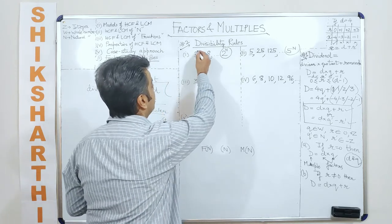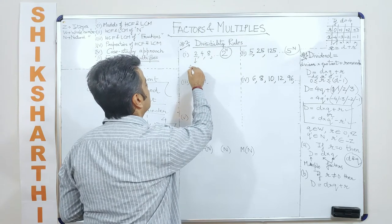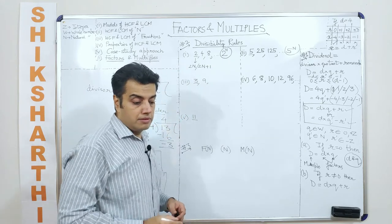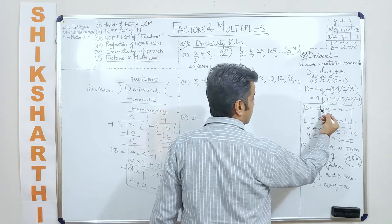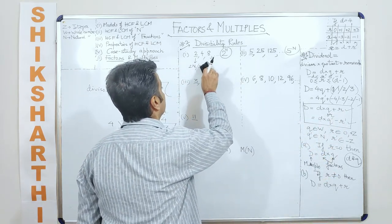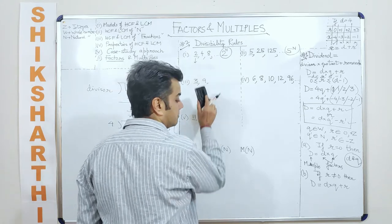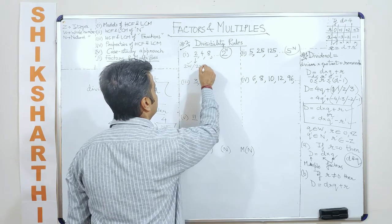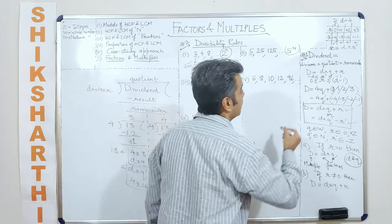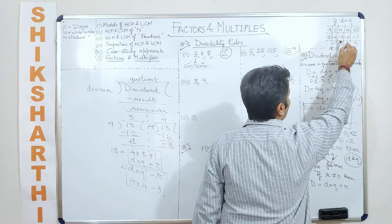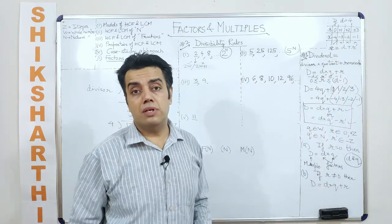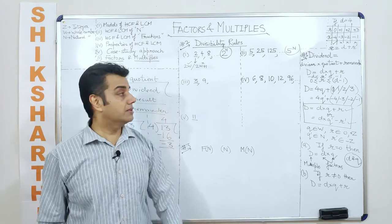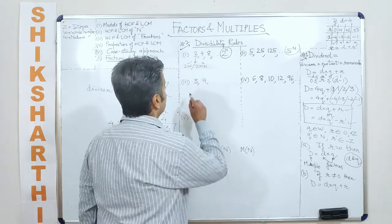For divisibility by 2: any number is either of the form 2W (divisible by 2, remainder 0) or 2W + 1 (not divisible by 2, remainder 1). In the table, a tick mark means remainder is 0 and a cross means a non-negative, non-zero remainder.